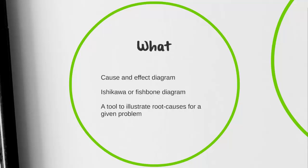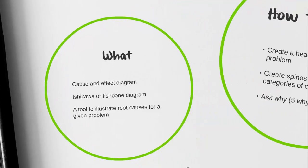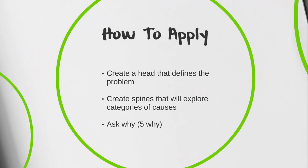We would first identify our effect and then identify the causes that lead to that effect. The head of the fish represents your effect — the problem you're identifying — and the spines explore the causes that created that problem. We approach it using a 5Y technique, or Ask Why, which is from Lean Six Sigma, to dig further into identifying the root cause.